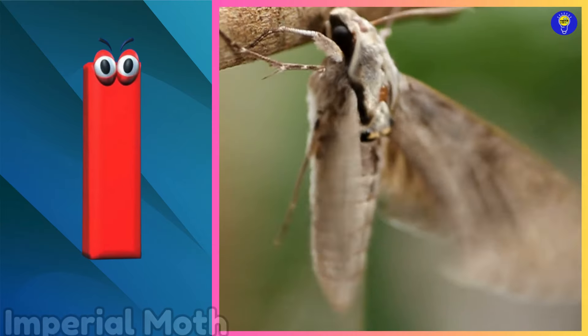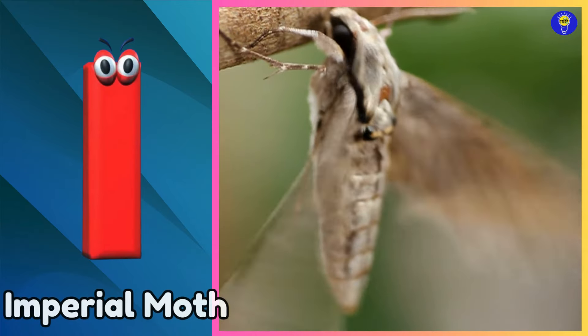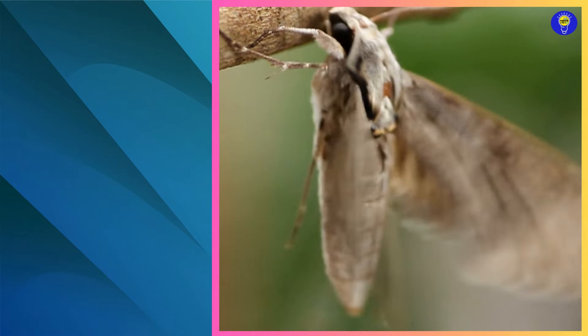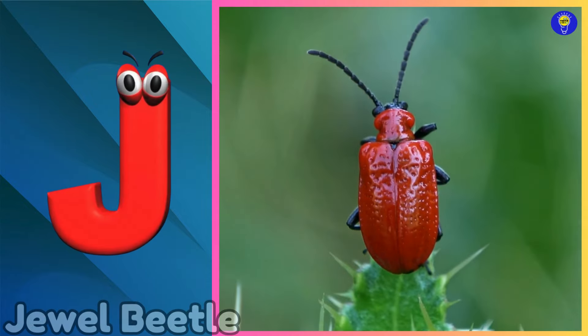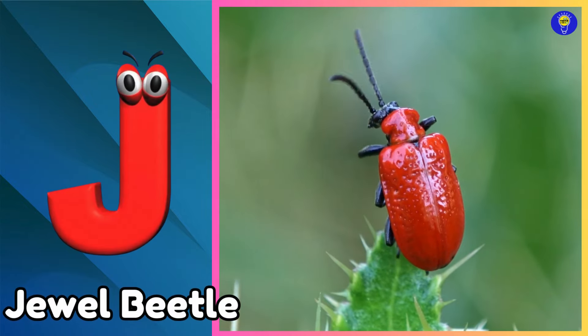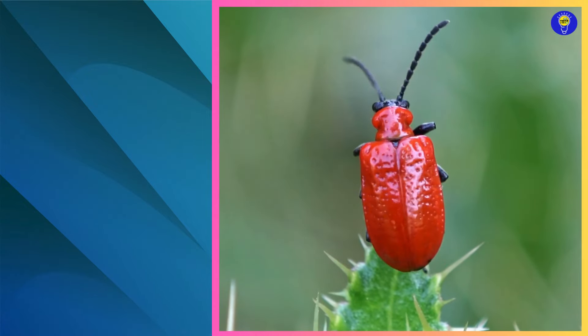I is for imperial moth. I, i, imperial moth. J is for jewel beetle. J, j, jewel beetle.